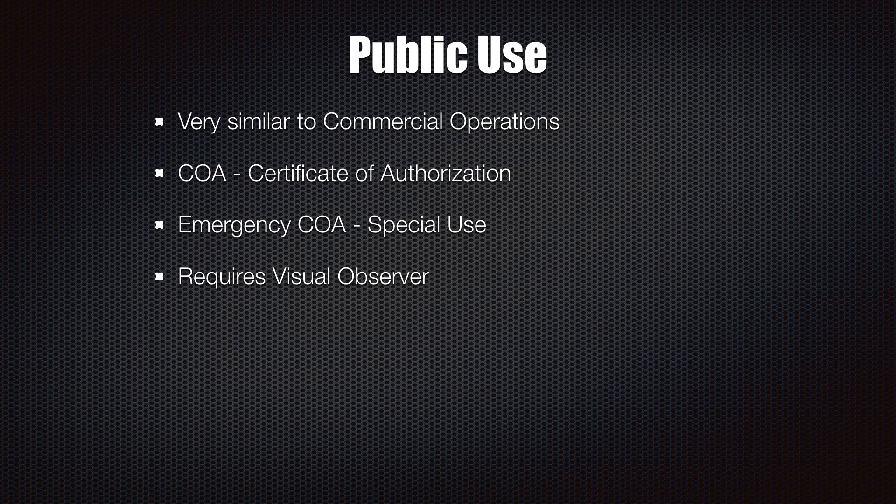The third category is public use, and this is by far the primary way that fire and emergency services need to be operating. It's very similar to commercial operations because they both fall under 14 CFR Part 107. To do this, a public agency typically gets a Certificate of Authorization, or COA. Basically, the FAA is authorizing the agency to fly their drone, whereas Part 107 certificates authorize the individual to fly their drone.